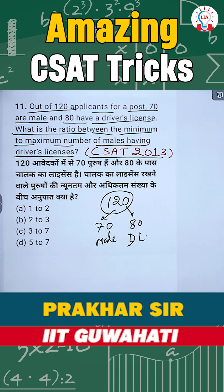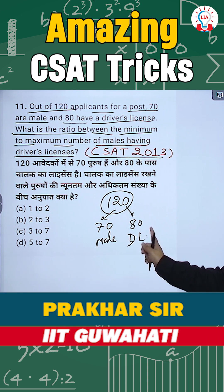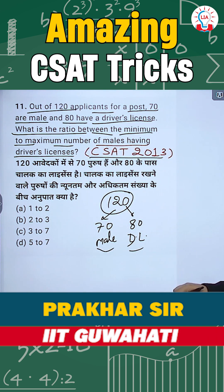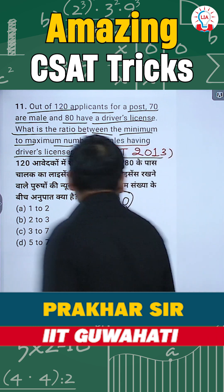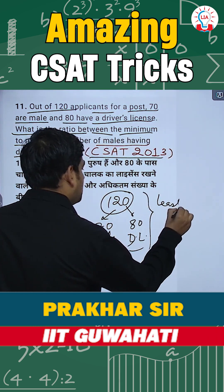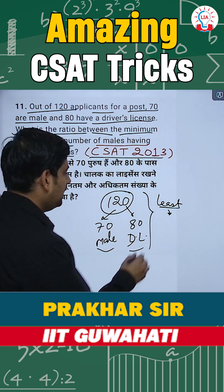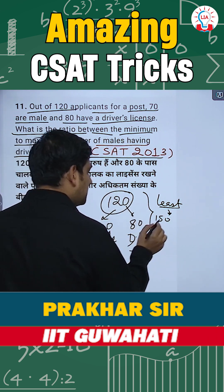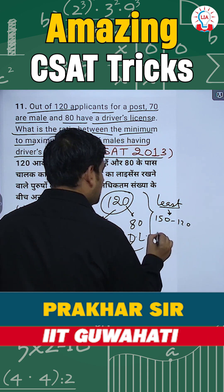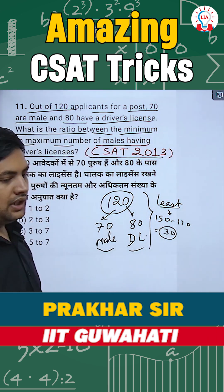If you add both of them you get 150. Now all of these 150 cannot be different people, so there has to be an intersection between males and driving license — that is, there would be some males who have a driving license. Now, 70 plus 80 is 150, but the total number of applicants is only 120. That means at least 30 people are both male and have a driver's license. This is the minimum.